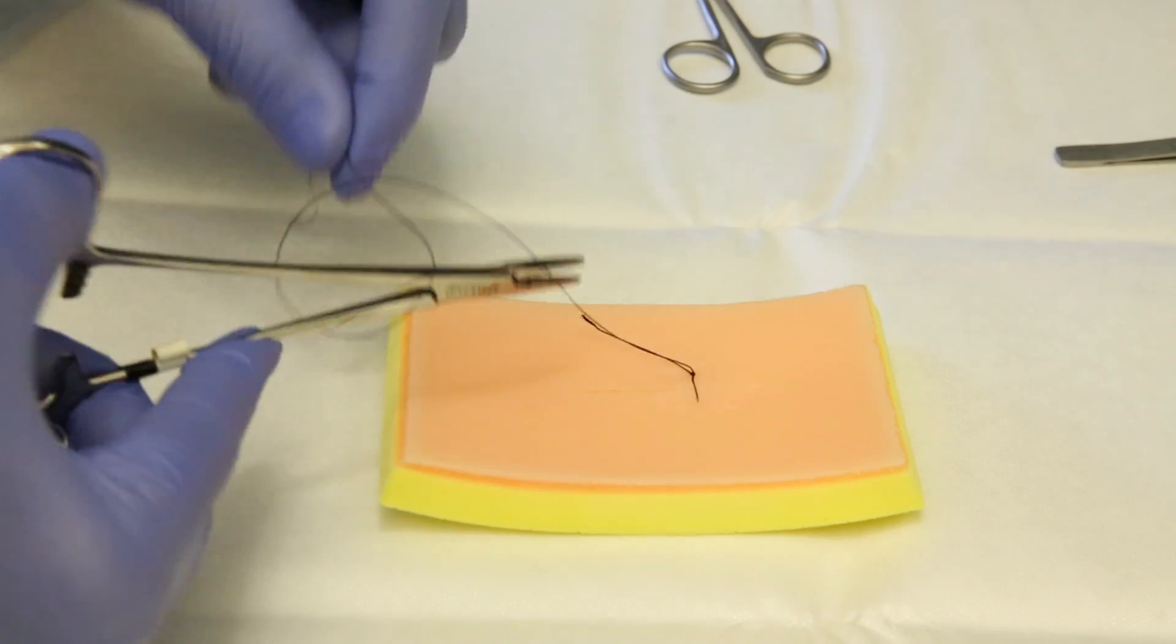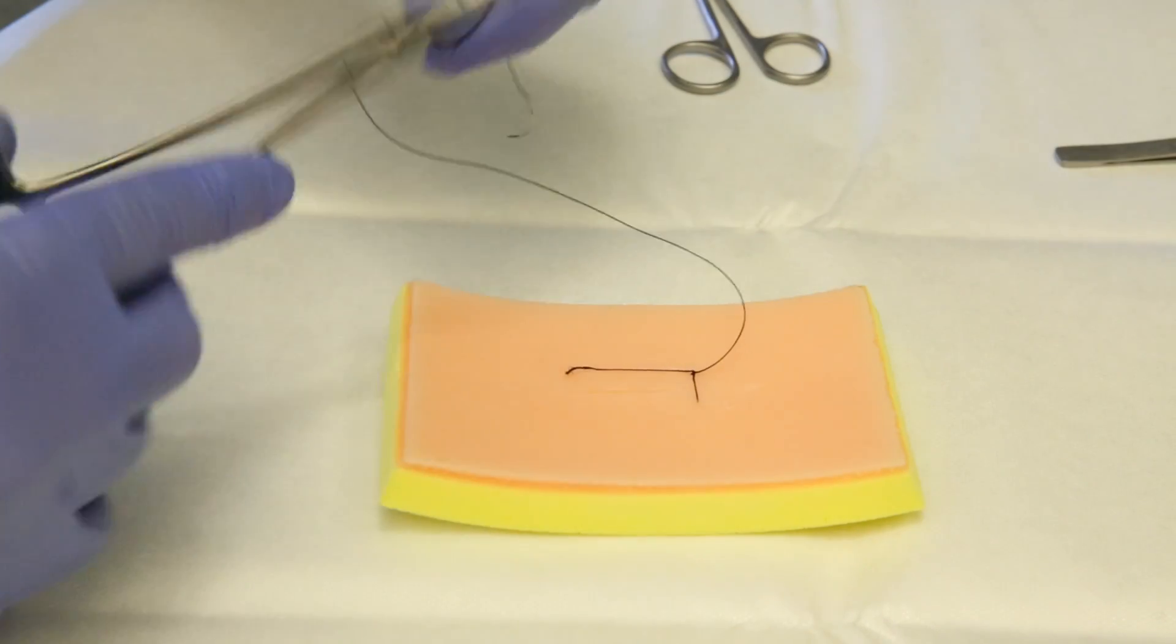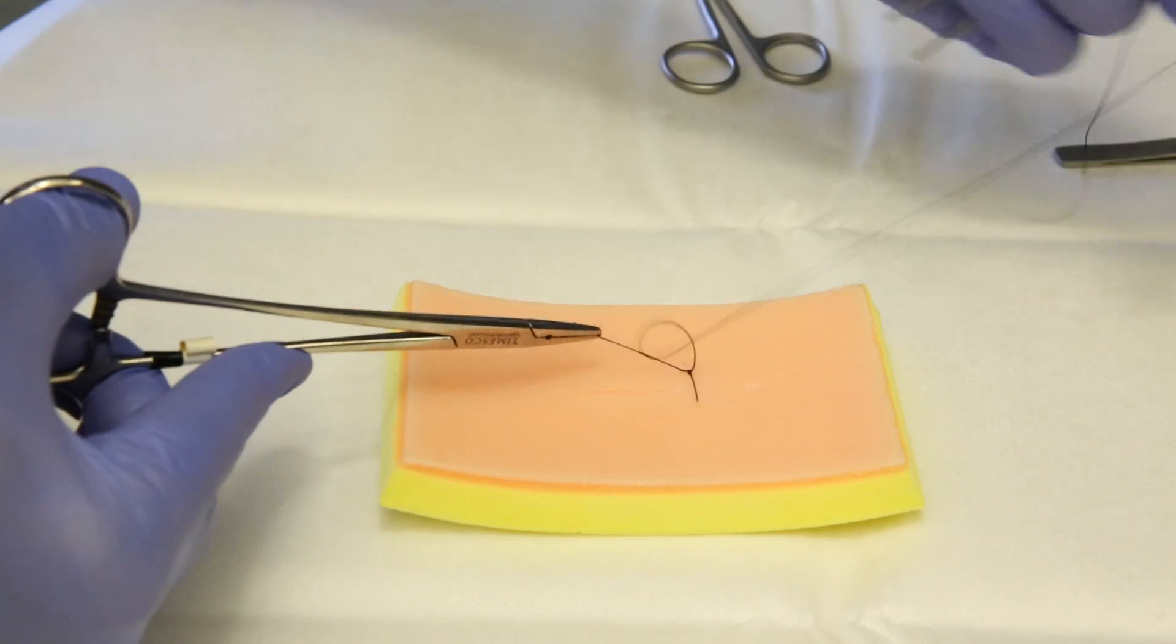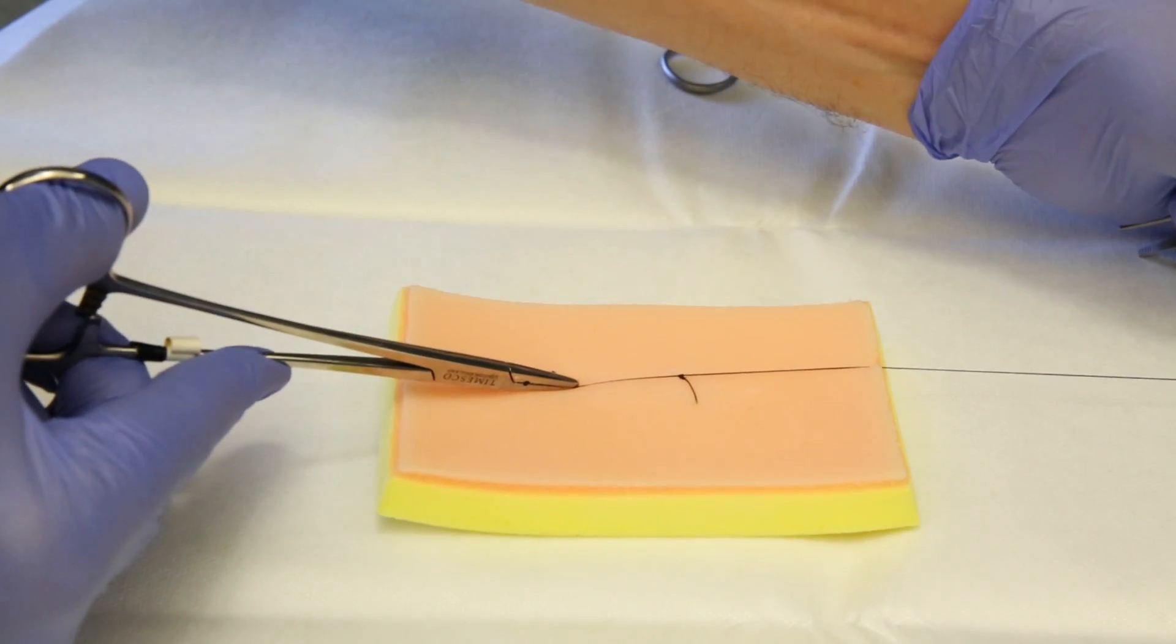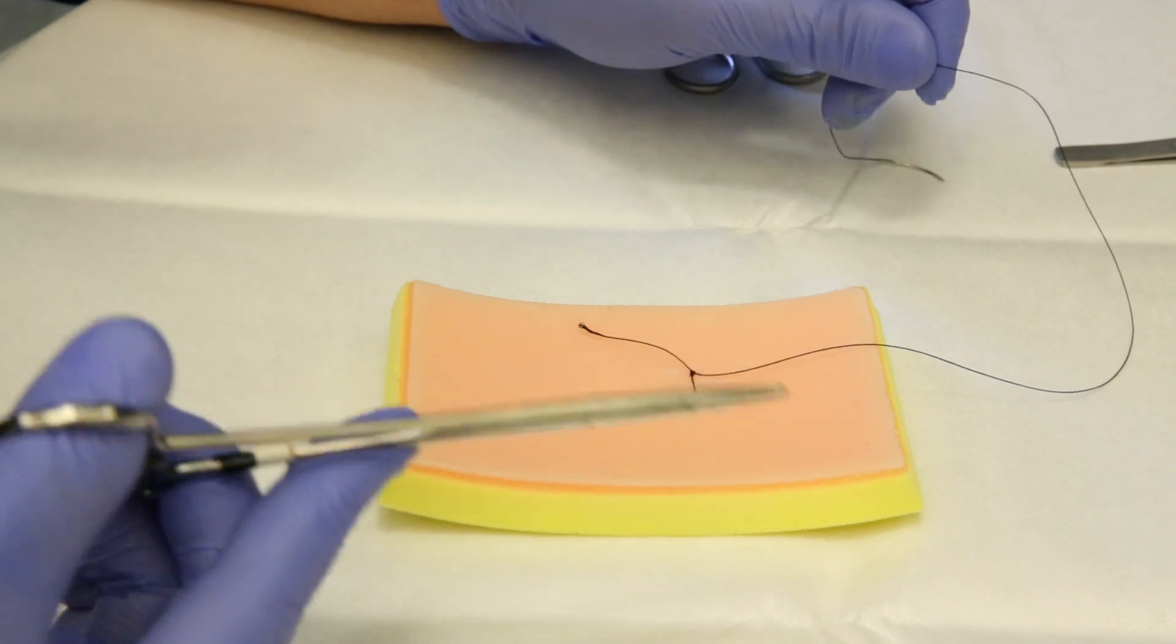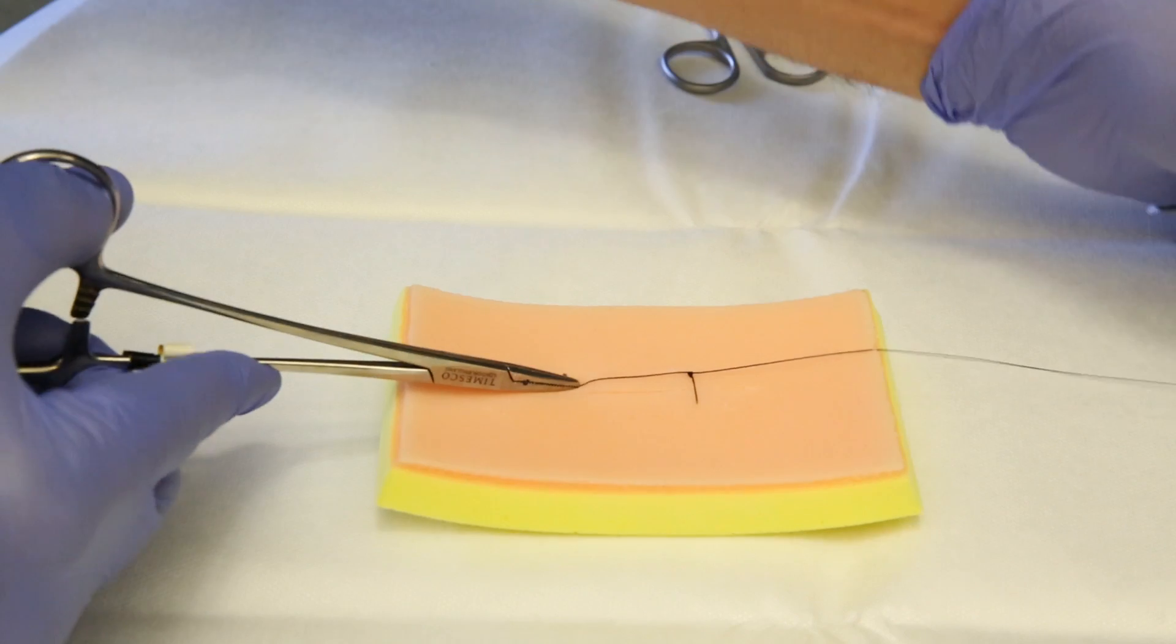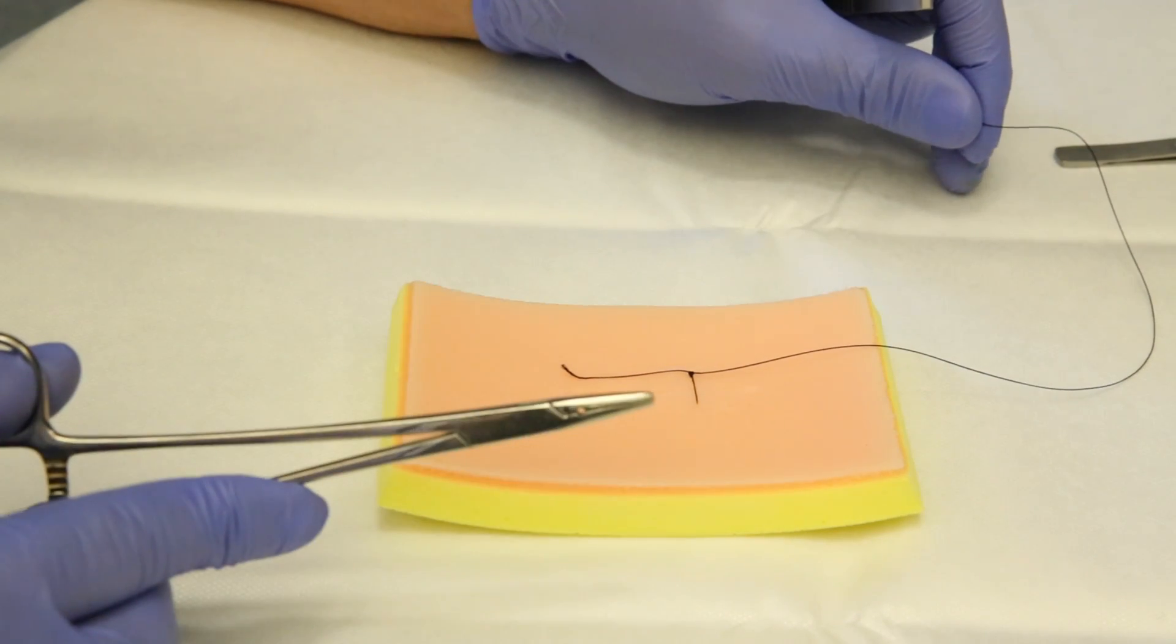You can make another one, another one. It depends on the size of the stitch you use. Sometimes we use four times, sometimes seven times. The smaller the stitch, the more the knots you need to do in order to secure it.